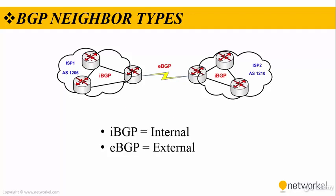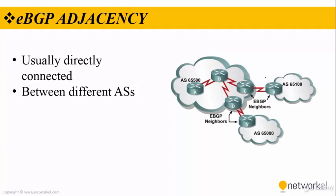As you can see in our figure, we have IBGP neighbors between routers with AS numbers 1, 2, and 3. These two routers can perform an EBGP peering because they belong to different autonomous system numbers. The EBGP neighbors are usually directly connected to each other, and EBGP allows route switching between different autonomous systems.